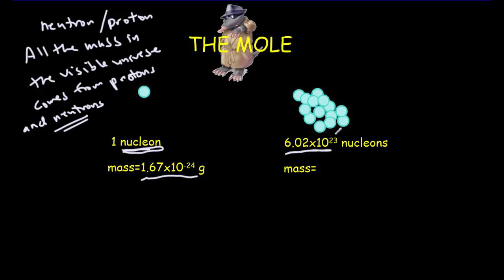Now, what is the mass of all those nucleons? Well, we'd have to take the number of nucleons and multiply it by the mass per nucleon and we'll get a mass here of 1 gram.